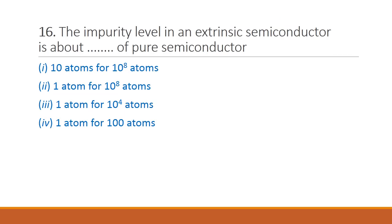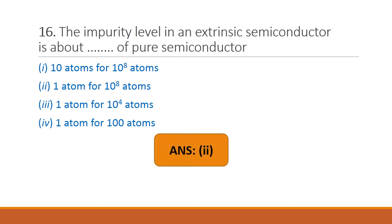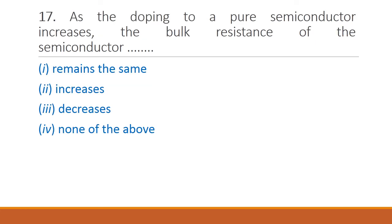Next question: the impurity level in an extrinsic semiconductor is about dash of pure semiconductor — it is 1 atom per 10⁸ atoms. Therefore option 2 is the right answer. Next question: as doping to a pure semiconductor increases, the bulk resistance of the semiconductor — remains the same, increases, decreases, or none of the above. Adding impurity increases conductivity, so resistance decreases. Therefore option 3 is the right answer.